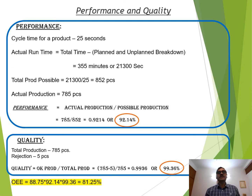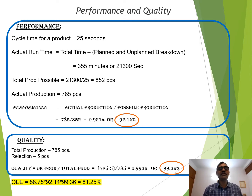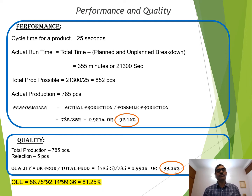Next is performance. The cycle time for a product is 25 seconds. Actual runtime is 355 minutes, or 21,300 seconds. Total production possible is 21,300 divided by 25 = 852 pieces, if I am 100% performing with no hidden or direct losses. But actual production is 785. So my performance is 785 divided by 852 = 92.14%. Please note that this is a very high figure — this is all assumption.